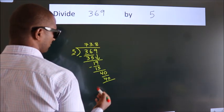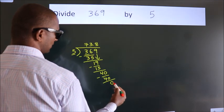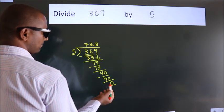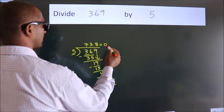Now we subtract and get 0. We got remainder 0, so this is our quotient.